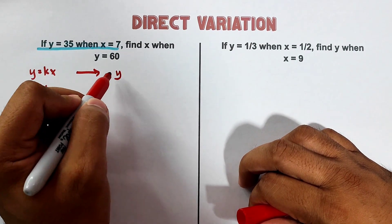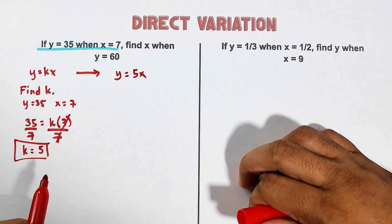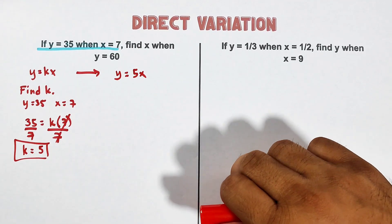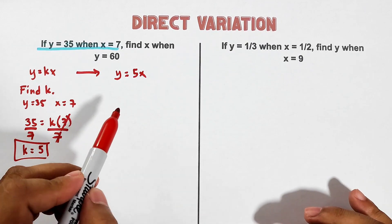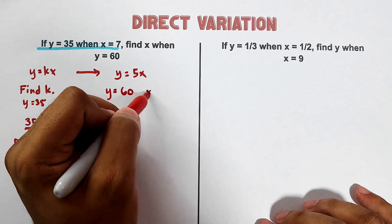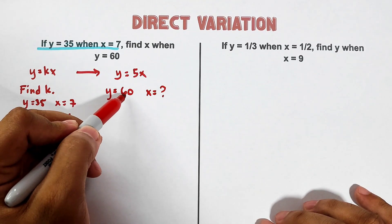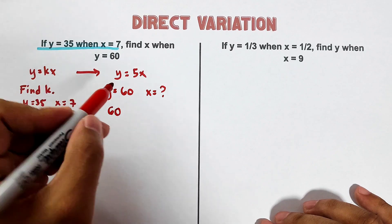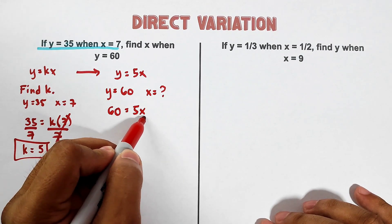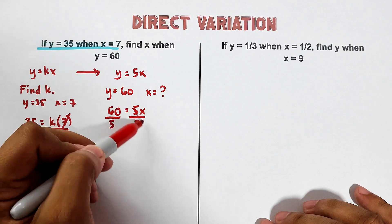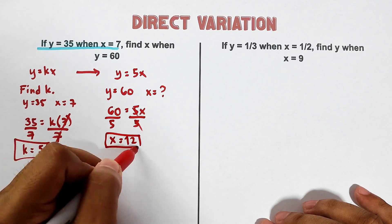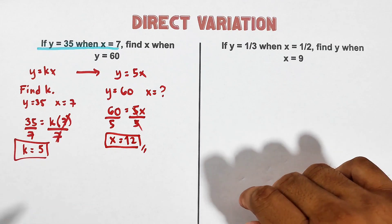The working equation becomes y = 5x. In example number 3 it is reversed — the unknown is x, not y. y = 60 is given. Substituting 60 into the equation: 60 = 5x. Dividing both sides by 5 and cancelling gives x = 60 divided by 5, which equals 12. That is the answer for number 3.